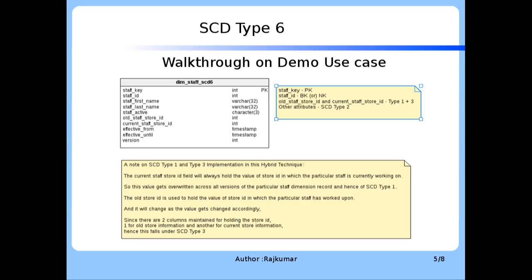Here is a walkthrough on the demo use case. This is the structure of our target dimension table. The staff key is a primary key and staff ID is a business key or natural key derived from the source. The old store ID and current staff store ID are handled by SCD Type 1 and Type 3, whereas attributes such as staff first name, last name, staff active, effective from, effective until, and version fields are handled by SCD Type 2. Hence this is an SCD Type 6 dimension table.